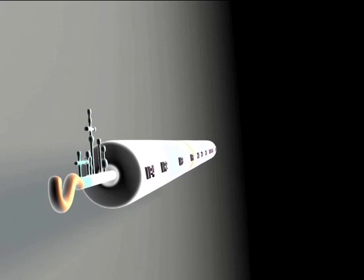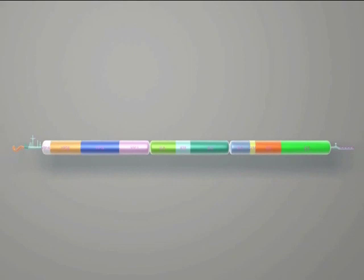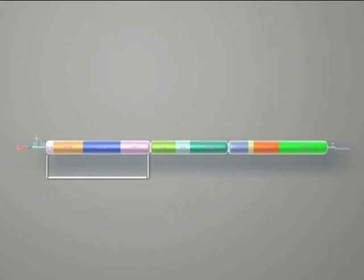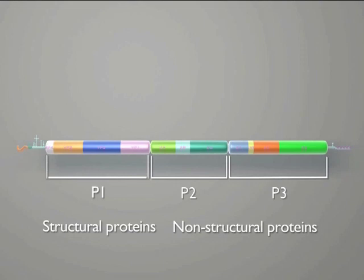Following the untranslated region, we find the protein coding region of the genome. The first part, indicated as P1, codes for the structural proteins of the virus. The subsequent parts, P2 and P3, code for the non-structural viral proteins.